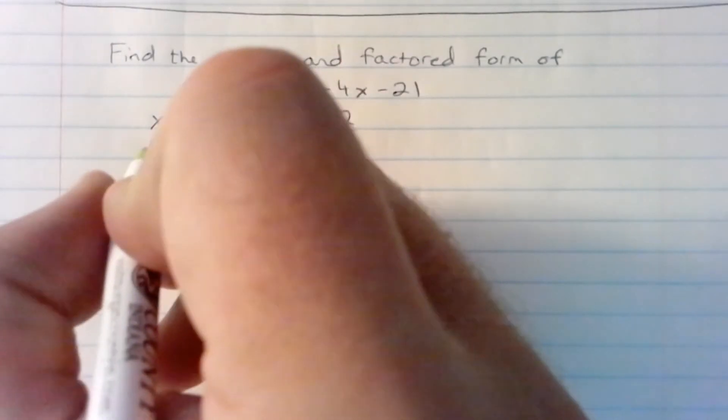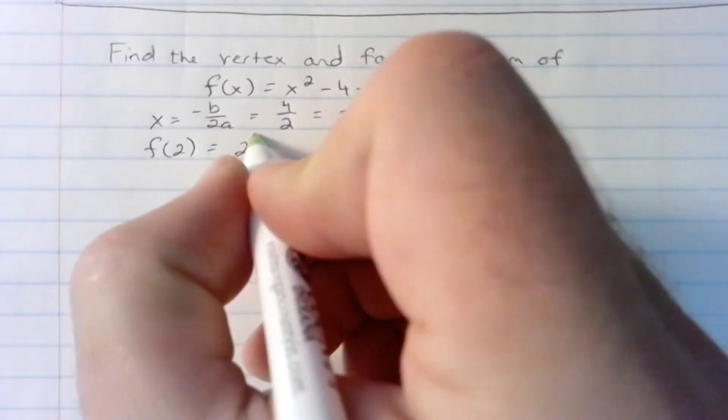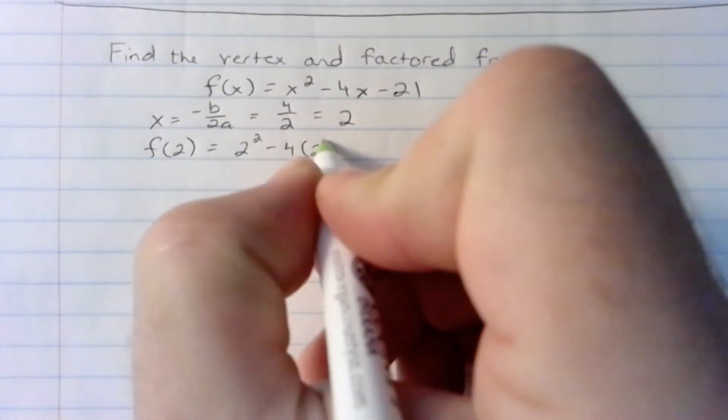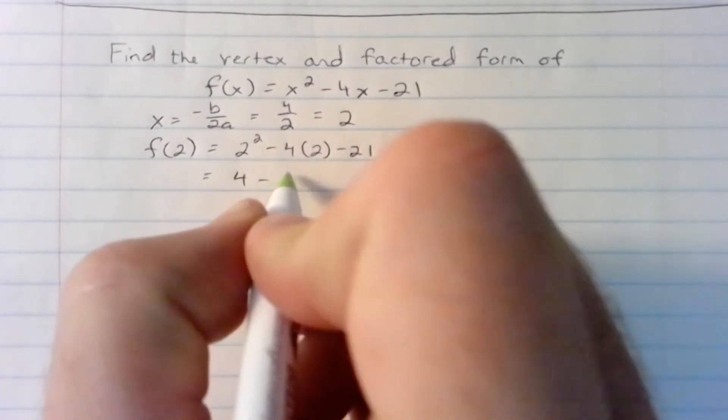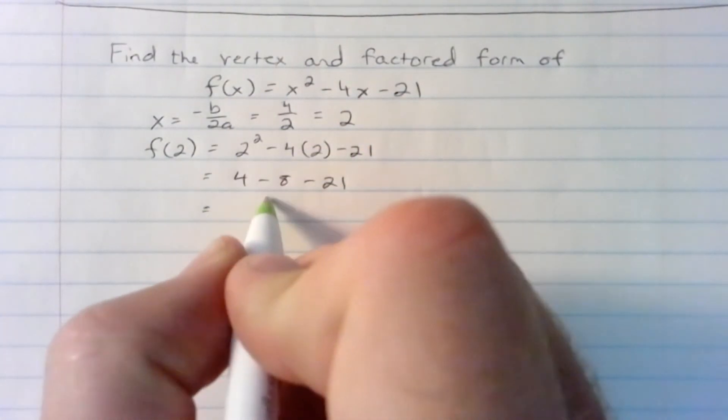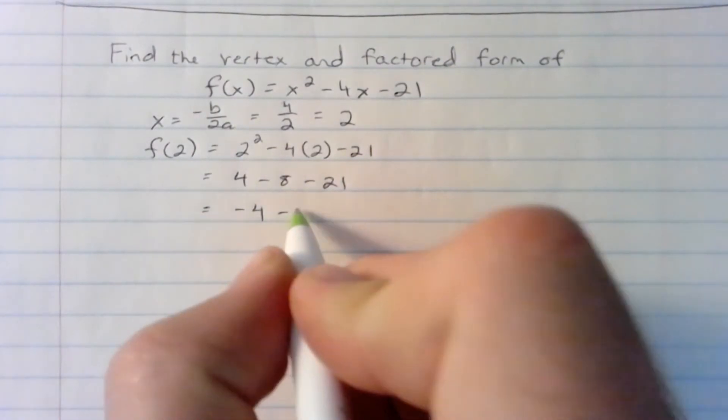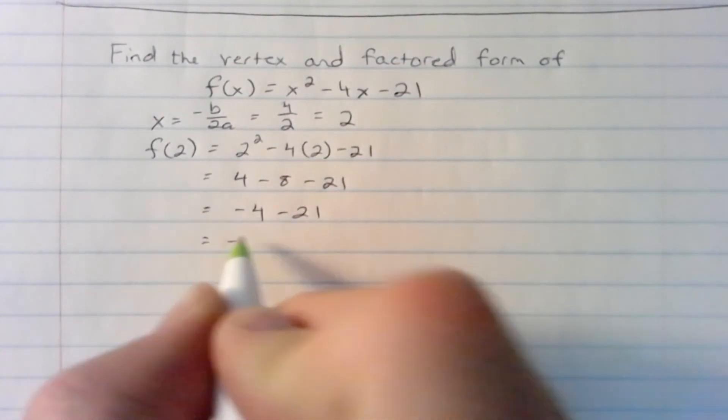Plug that x coordinate of 2 back into the original. 2 squared minus 4 times 2 minus 21. 4 minus 8 minus 21. Negative 4 minus 21. Negative 25.